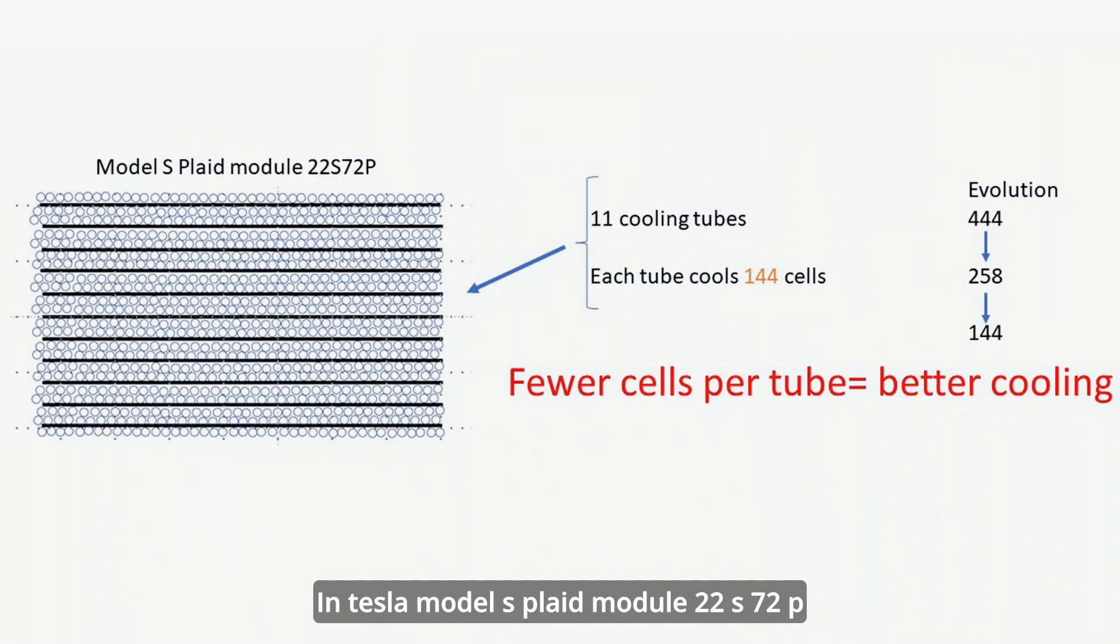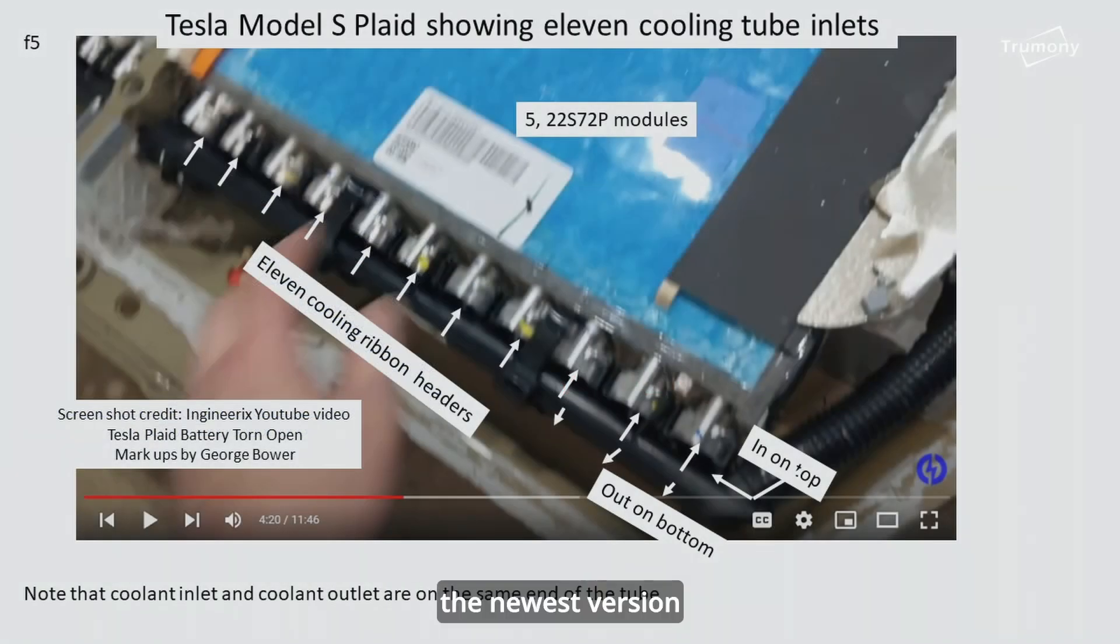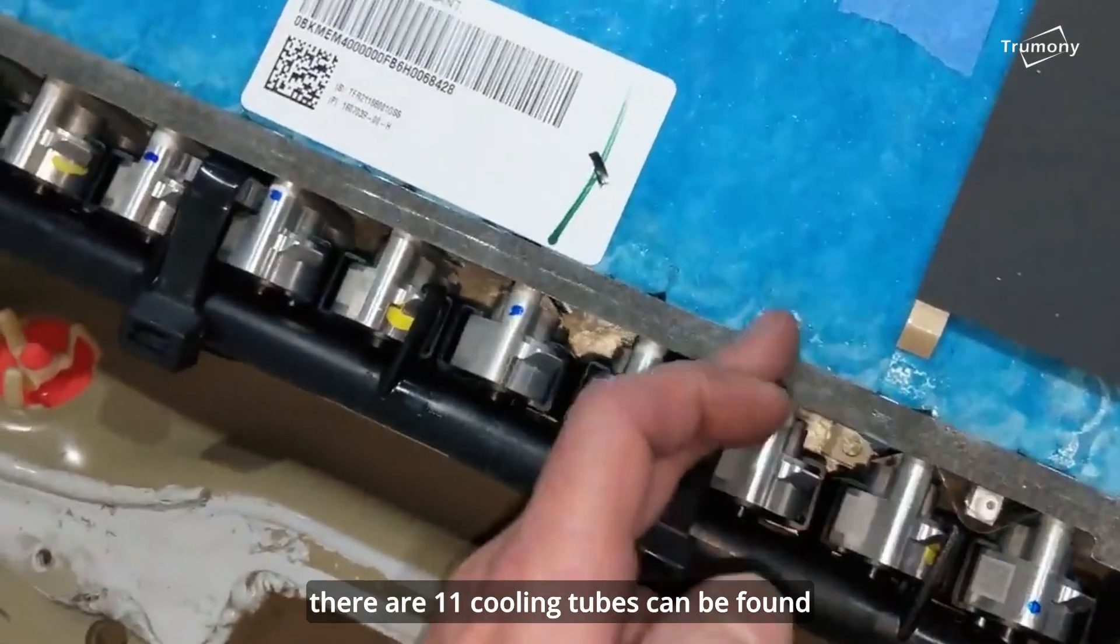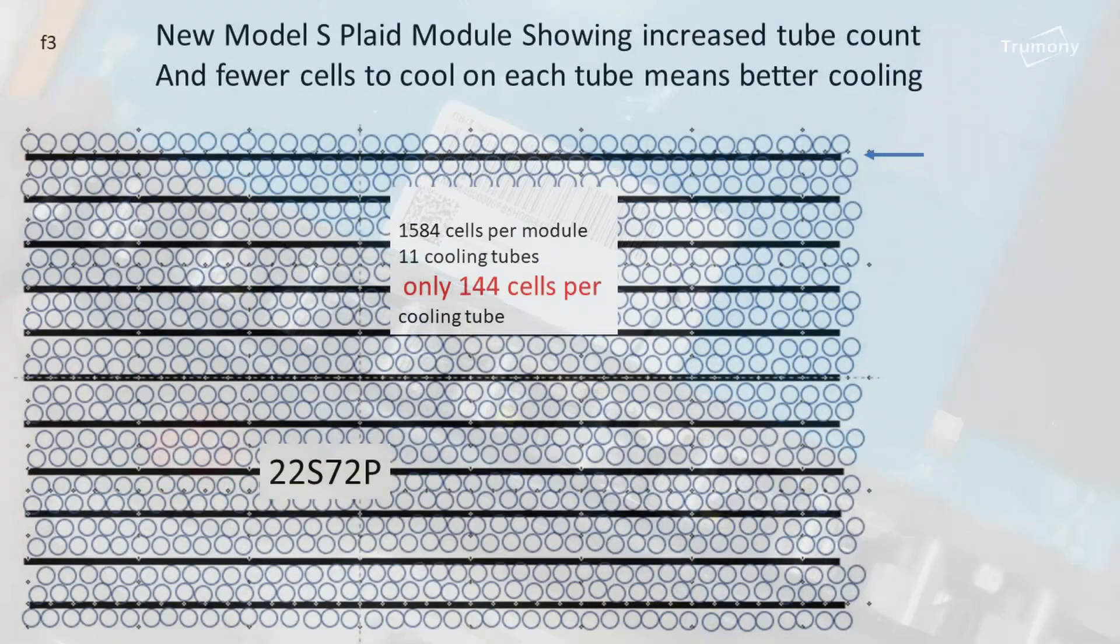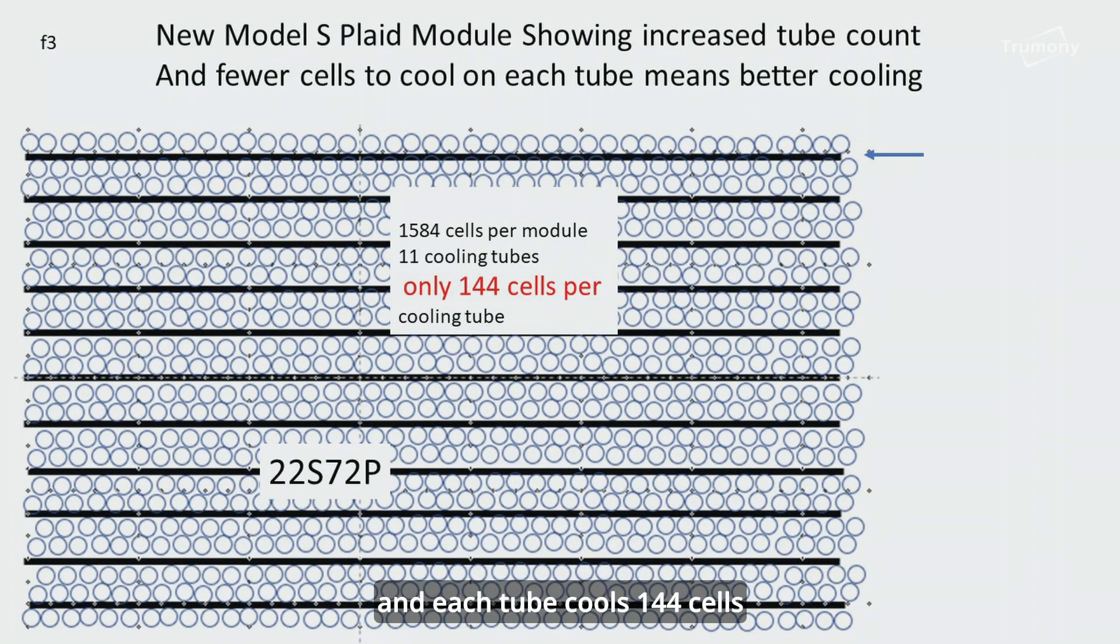In Tesla Model S Plaid Module 22S72P, the newest version, there are 11 cooling tubes that can be found, and each tube cools 144 cells.